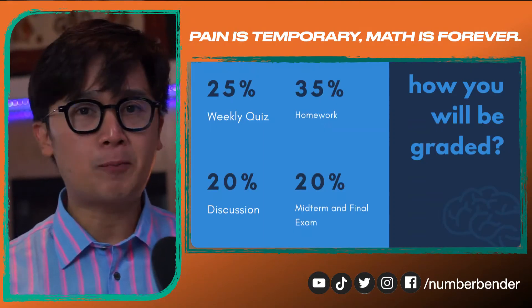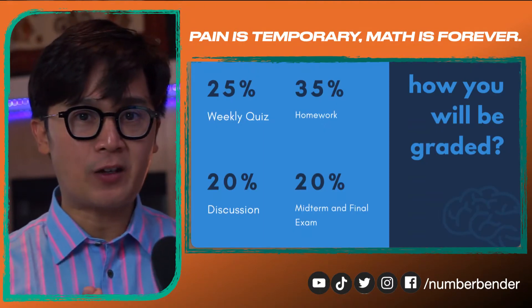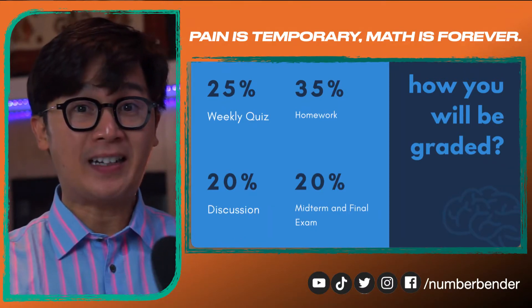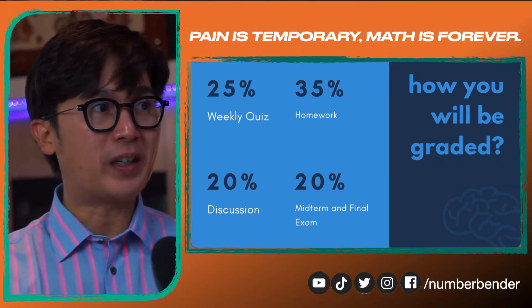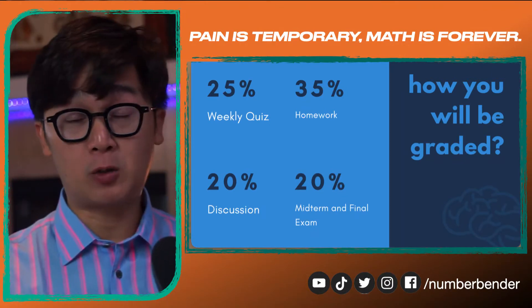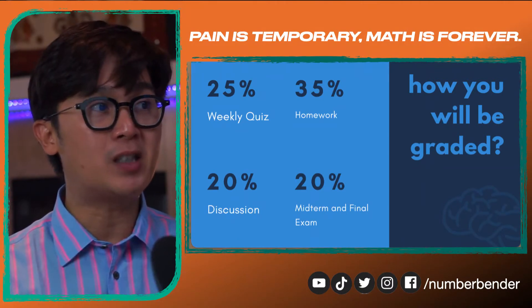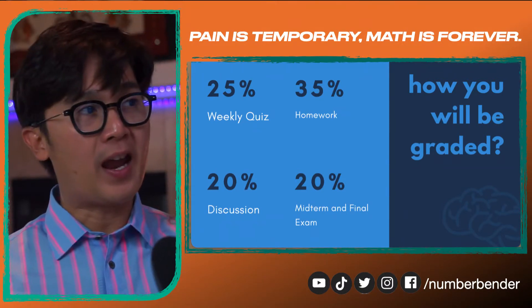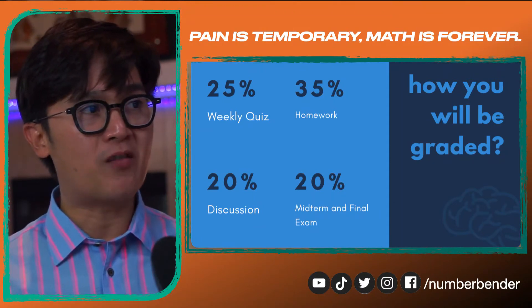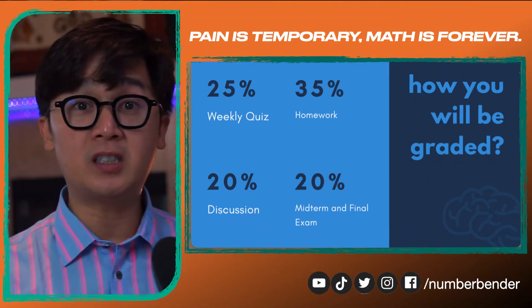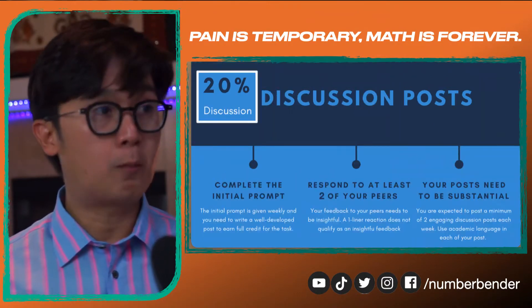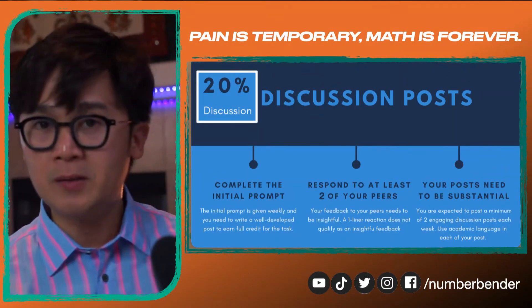How are you going to keep your A in our course? You are going to work on your weekly quizzes, your weekly homework, and weekly discussion posts, which I'm going to be discussing in a little while. And of course, your midterm and your final exam. The breakdown is 25% for your weekly quiz, 35% for your homework, 20% for your discussion, and 20% for your midterm and your final project.